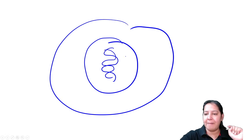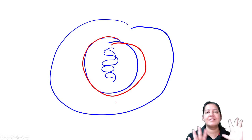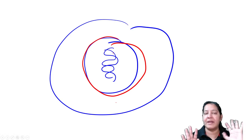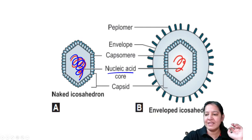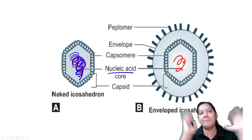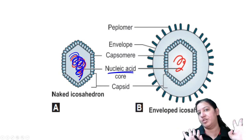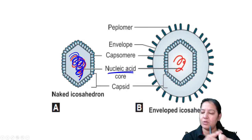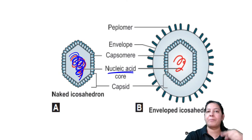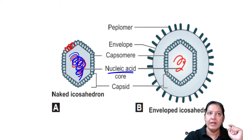Nucleic acid is always present in viruses - it can be DNA or RNA but never both. The second compulsory thing is the protein covering. This protein covering is called capsid. It is a polymer made up of monomers called capsomers. Multiple capsomers combined together form this covering known as capsid.